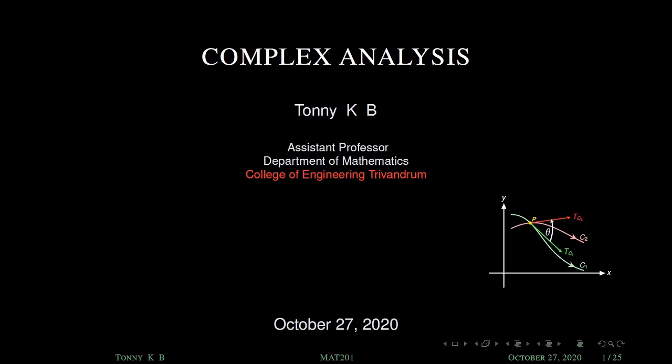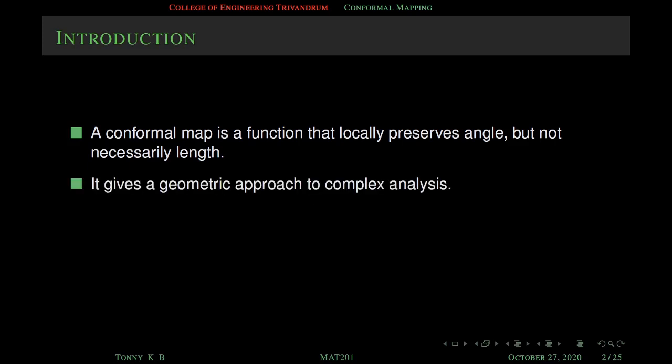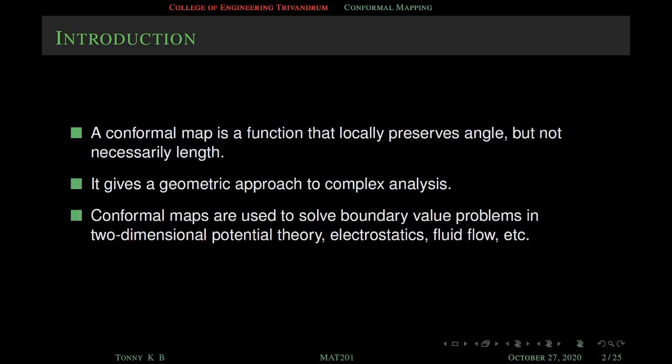Namaskar. Today we are going to discuss conformal maps. A conformal map is a function that locally preserves angle but not necessarily length. It gives a geometric approach to complex analysis. Conformal maps are used to solve boundary value problems in two-dimensional potential theory, electrostatics, fluid flow, etc.